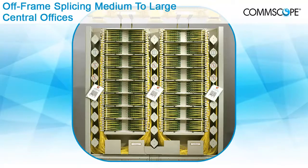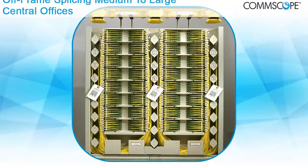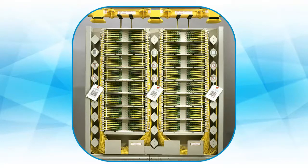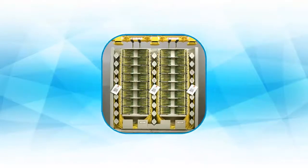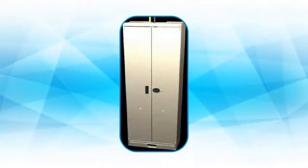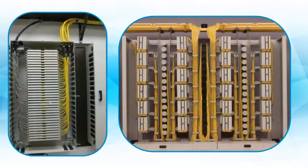For larger OSP fiber counts, off-frame splicing is ideal. This is done by splicing OSP fibers to pigtails in a location away from the ODF, such as the cable vault, using a large-capacity splice frame or wall-mount cabinet. Splice cabinets that handle 864 splices are common. The link between the splice closure and the ODF is made via an intra-facility cable, or IFC, that is connectorized on one end and ready to be loaded into the termination panel.